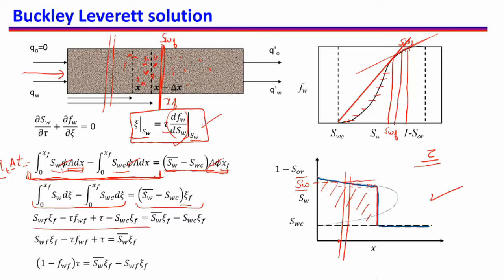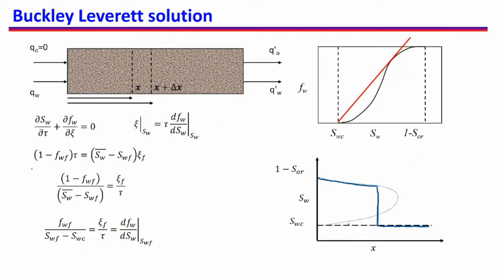Integrating and using the result from the last video, the terms cancel and we separate out the xi-f term. This gives us: (1 minus FWF) times tau, and xi-f separates out as (SW bar minus SWF). Taking tau in the denominator and (SW bar minus SWF) in the denominator on the left-hand side, we arrive at the final form of this equation.